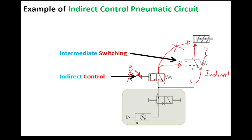So the operator is indirectly actuating the cylinder since we have this intermediate switching. Okay, so we are done with the definition of indirect.